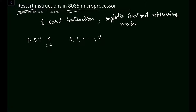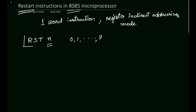What is the function of this restart instruction? First of all, in the main program the program counter holds the memory address of the next instruction that is going to be executed by the microprocessor. When we have this restart instruction - where n can be 0, 1, 2, 3, 4, 5, 6, or 7 - the program counter content must be saved in the stack.